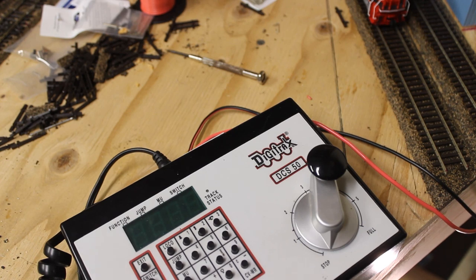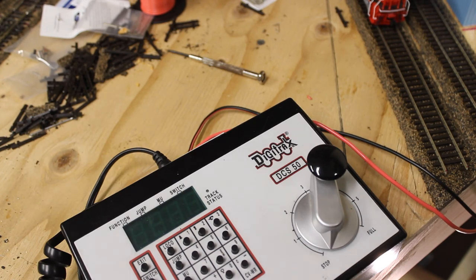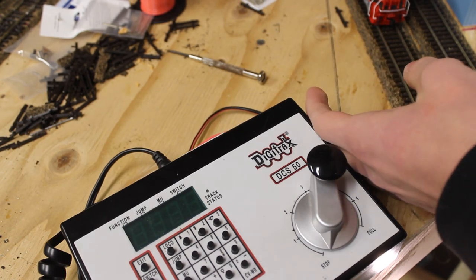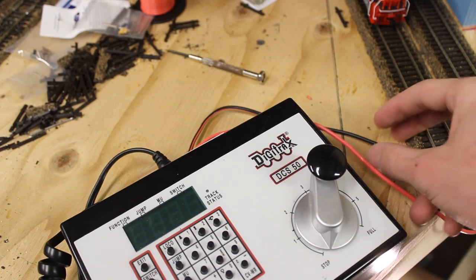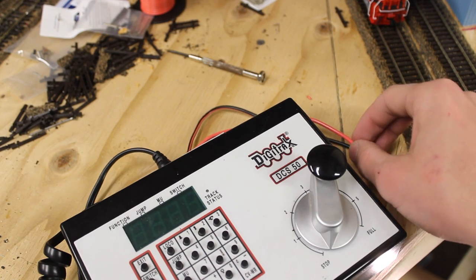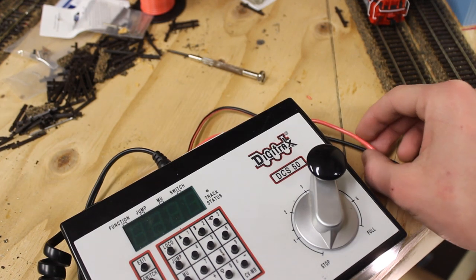Some of the advantages of running a bus wire instead of running each individual feeder to your layout is that it can save wires and it makes it much more tidy, and it allows you to have only one wire running from your power supply to power the entire layout.